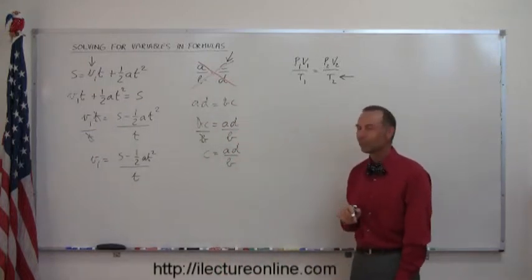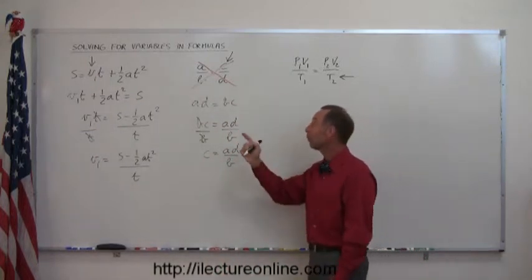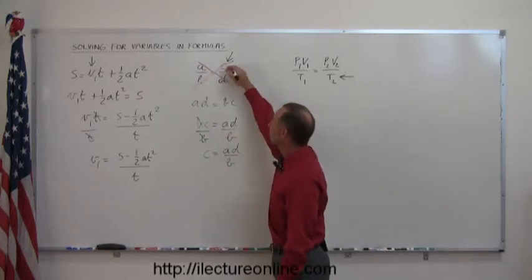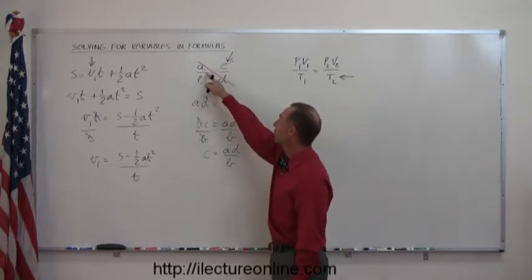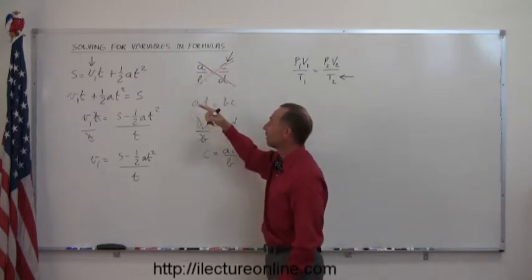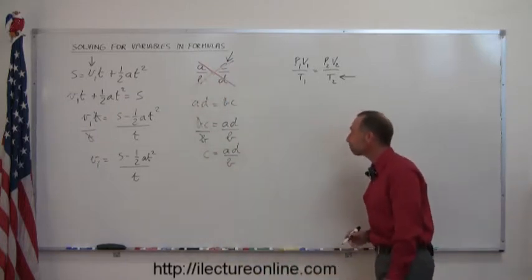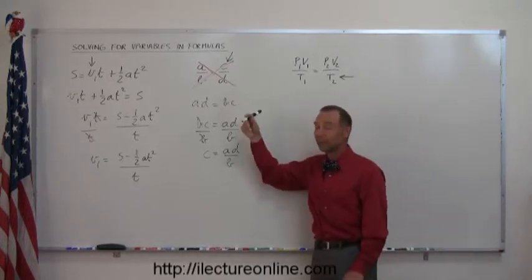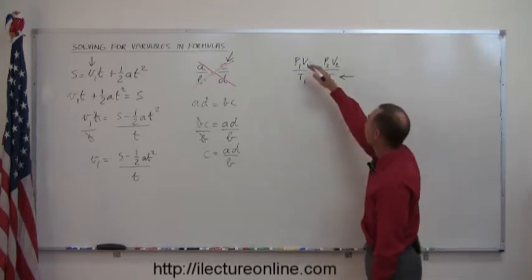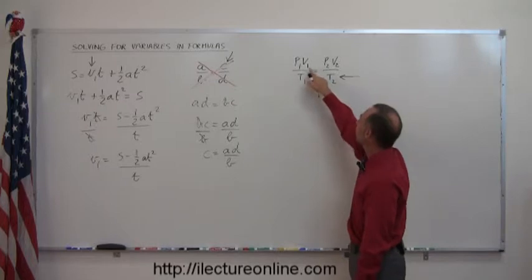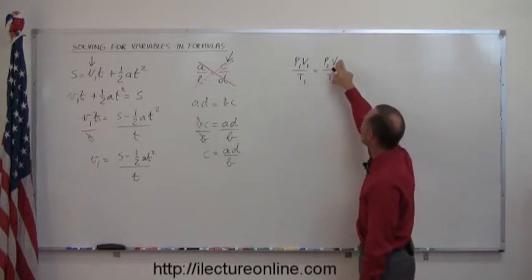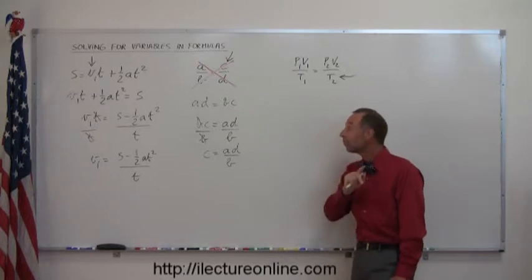So when you do this it's really not that hard. Remember the trick: whenever you have a fraction equals a fraction you can move things up and down along the diagonal. Now we come to this one that looks a lot more complicated but the principle is still the same. I'm looking for t2, I can move t2 over there, I can move p1 v1 down here, I can move t1 up here and that will just simply solve the problem.